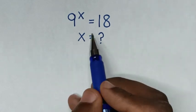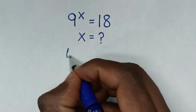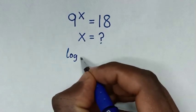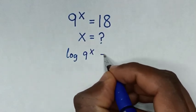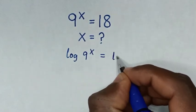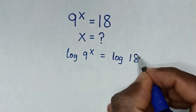So first we'll apply log on both sides, so it will be log of 9 to the power of x is equal to log of 18.